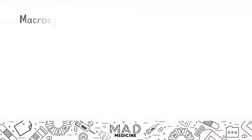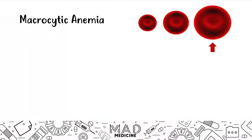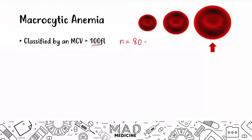Let's talk about macrocytic anemias. These are anemias classified by an MCV greater than 100. Normally it's 80 to 100 — that's the normal MCV, the volume of the red blood cell. Because this is a macrocytic red blood cell, you're going to have a large volume, as depicted by the image on the right.